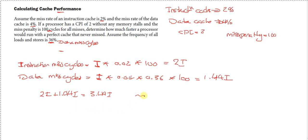That brings us to calculating the total CPI including the memory stalls. That would be equal to 2I plus 3.44I, which would be 5.44I.